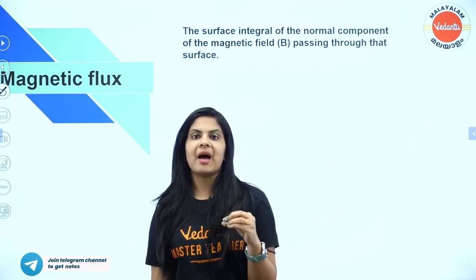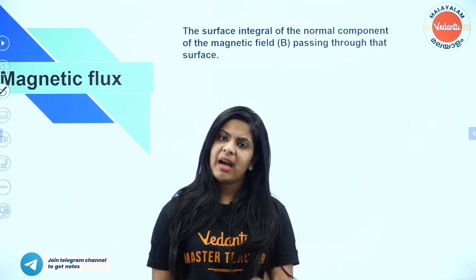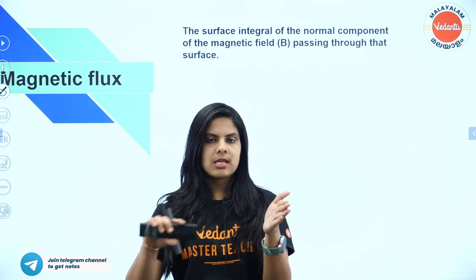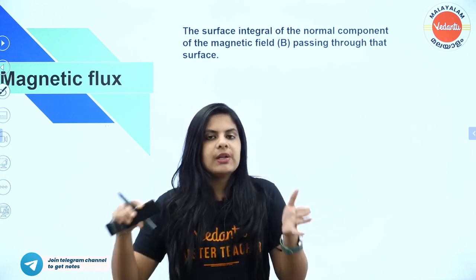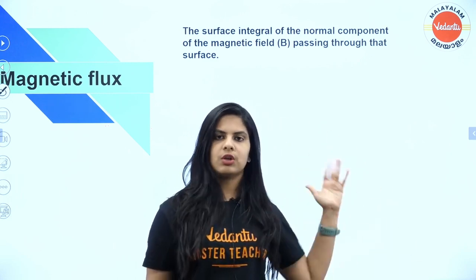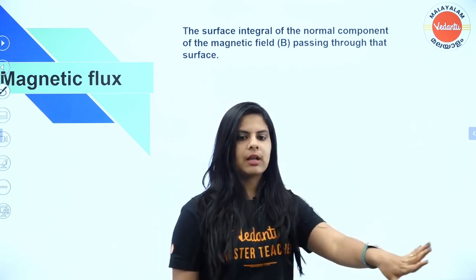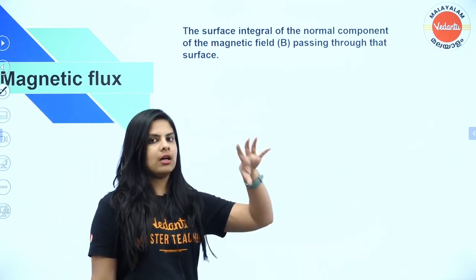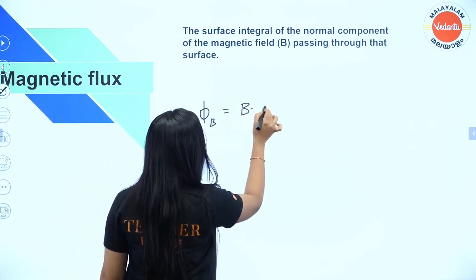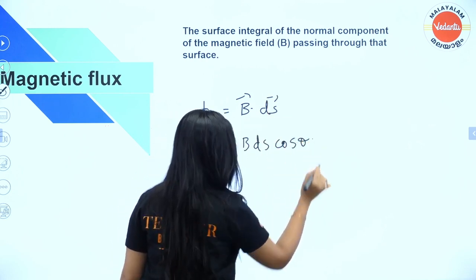So first we are looking at magnetic flux. How does magnetic flux work? Magnetic flux is the magnetic field lines passing through a particular area perpendicular to the surface. We can write it as B·dS, that is B·dS cosθ.